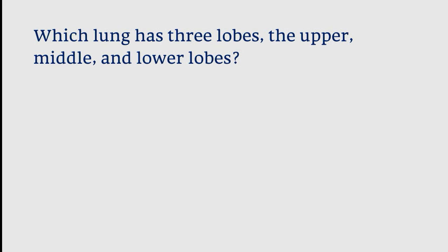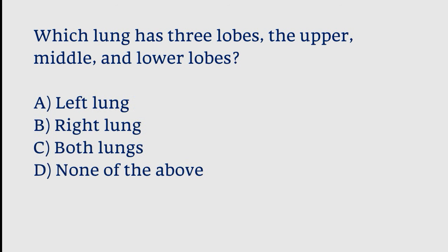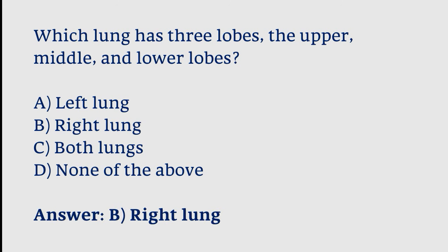Which lung has three lobes — the upper, middle, and lower lobes? Options: left lung, right lung, both lungs, none of the above. The correct answer is option B. The right lung has three lobes.